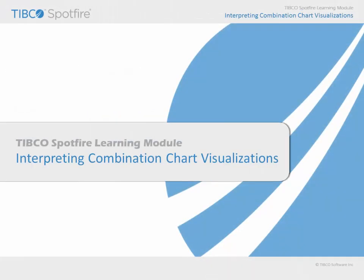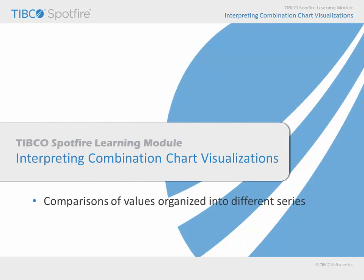In this learning module, we will consider the ways in which Spotfire combination charts may be used to visualize data, including their utility in the comparison of values organized into different series. The key attribute of these visualizations is the ability to display lines superimposed upon bars.